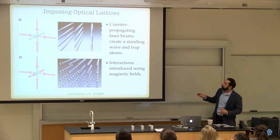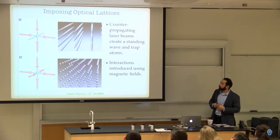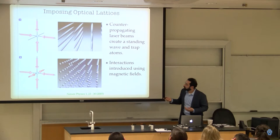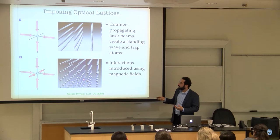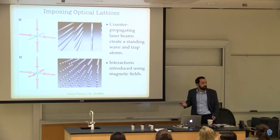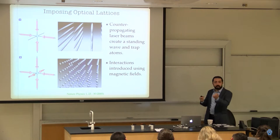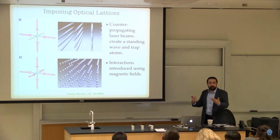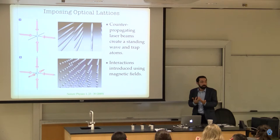If you shine counterpropagating lasers from two sides, atoms are confined in a cigar-shaped geometry. From all six sides you get something that looks like a cubic lattice. You can tune the atom concentration so that on average there's one atom per lattice site, perfectly capturing the Fermi-Hubbard model for a cubic lattice. Because the sites are close together, quantum tunneling occurs between them, and you can add and control interaction through a magnetic field. This gives all the ingredients to simulate the theoretical model that we couldn't otherwise solve.